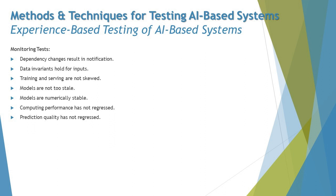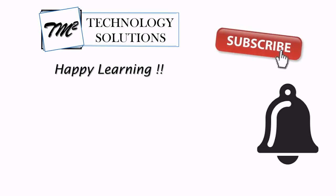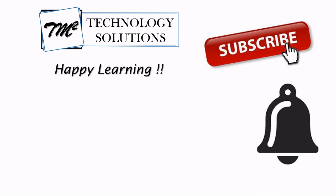To summarize, experience-based testing for AI-based systems covers four key techniques: error guessing, exploratory testing, checklist-based testing, and tours — with tours being a unique addition specific to AI-based systems. That's all from this tutorial. Feel free to comment below with any queries. Keep learning, keep exploring, and happy learning!